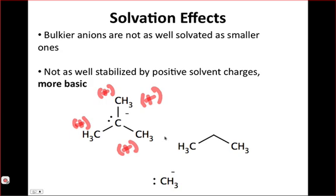Now, in the case of bulky anions, such as the tert-butyl anion, the large methyl groups on the outside of the anion shield the negative charge from receiving this benefit of positive charges from the solvent. It's very difficult for those charges to get in close to the tert-butyl anion.